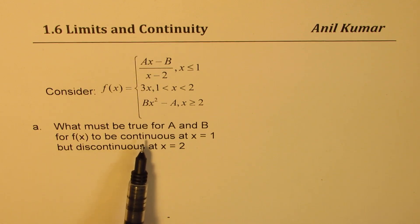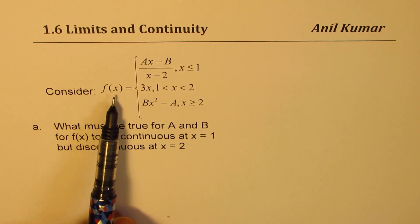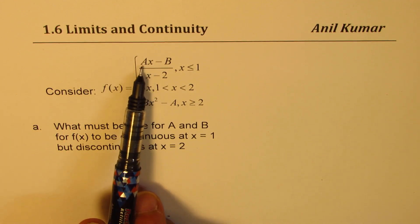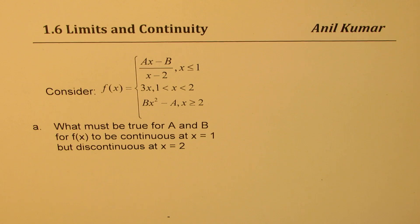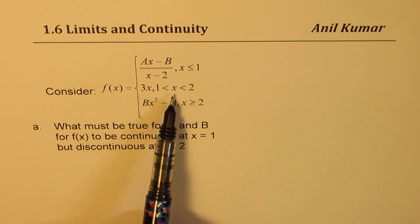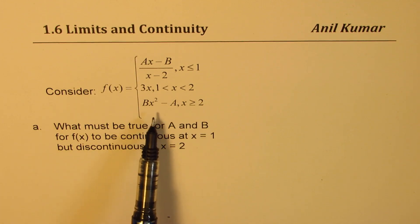Let's see what the question is. It says consider the function f(x) equals Ax minus B divided by x minus 2 when x is less than or equal to 1, 3x when x is between 1 and 2, and Bx squared minus A when x is greater than or equal to 2.